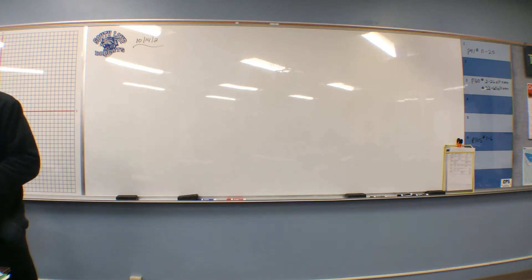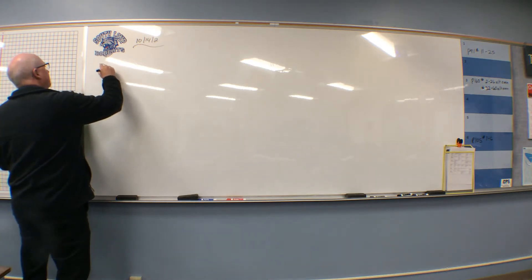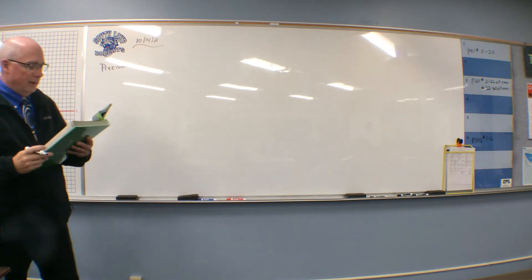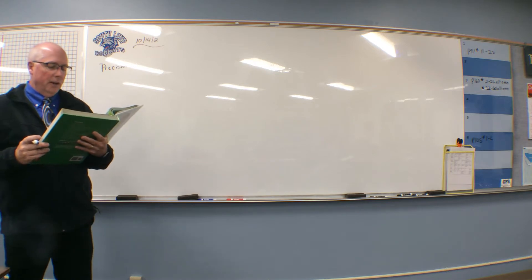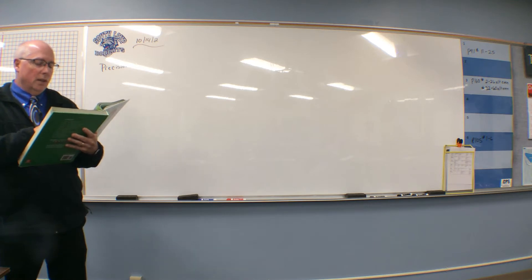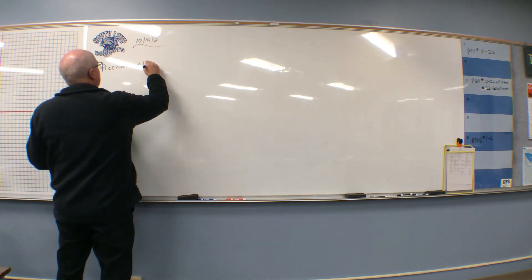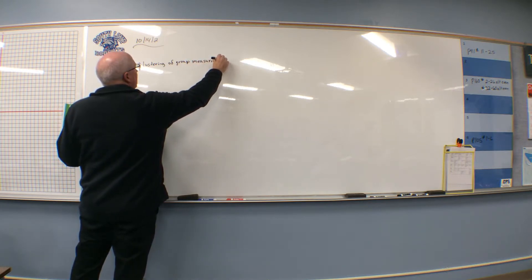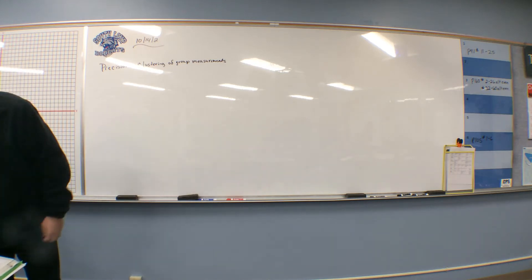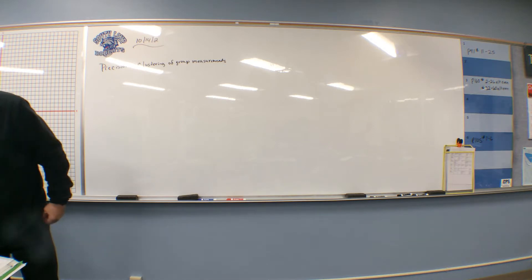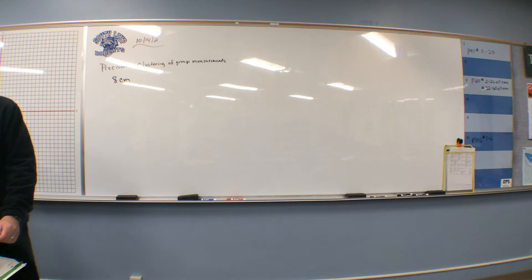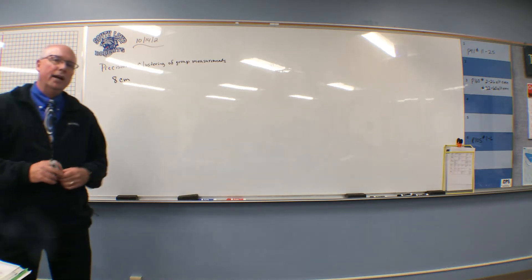If we look on page 91, the first word in this section is precision. Let's write that word down. Precision refers to the clustering of a group of measurements. It depends only on the smallest unit of measure available on a measuring tool. So it refers to a clustering of group measurements. Looking at the assignment on page 93, it says find the absolute error of each measurement and explain its meaning — so we're headed towards absolute error.